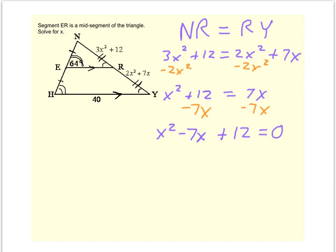And so now we're looking for factors of 12 which add to negative 7. Well, factors of 12, it's either 2 and 6 or 3 and 4. So negative 3 and 4 will do the trick. We have x minus 3 times the quantity x minus 4 equals 0.